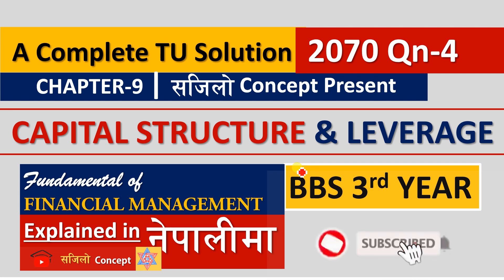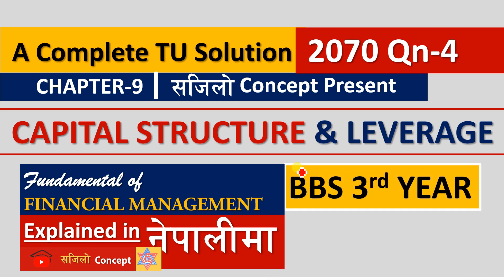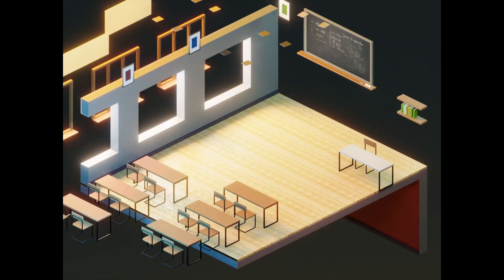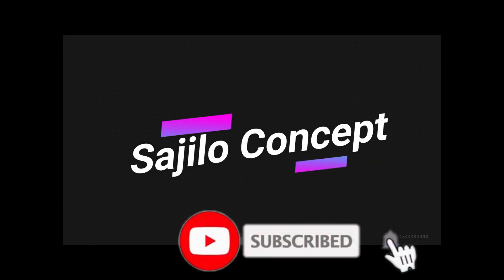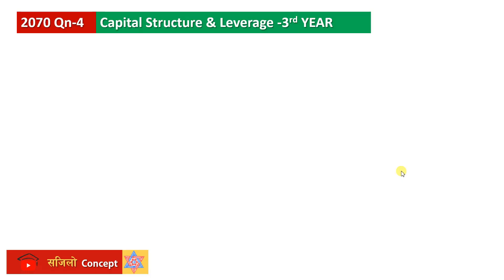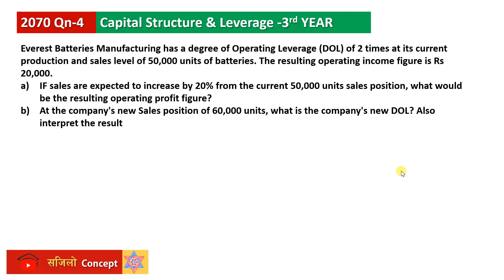Hello, I'm Sandeep Singh. Today we will talk about capital structure and leverage. We will talk about question number 70. The question is about the average battery manufacturing rate, and the degree of operating leverage is 2 times.